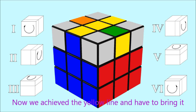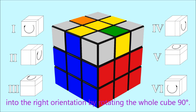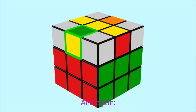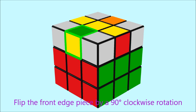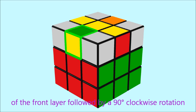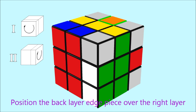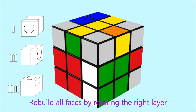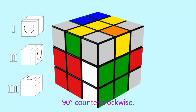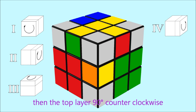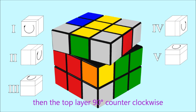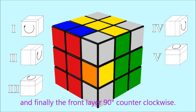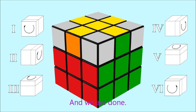Now we have achieved the yellow line and need to bring it into the right orientation by rotating the whole cube 90 degrees. And again: flip the front edge piece by a 90 degrees clockwise rotation of the front layer, followed by a 90 degrees clockwise rotation of the right layer. Position the back layer edge piece over the right layer by rotating the top layer 90 degrees clockwise. Rebuild all faces by rotating the right layer 90 degrees counterclockwise, then the top layer 90 degrees counterclockwise, and finally the front layer 90 degrees counterclockwise. And we are done.